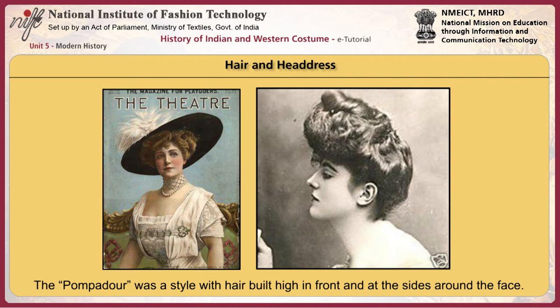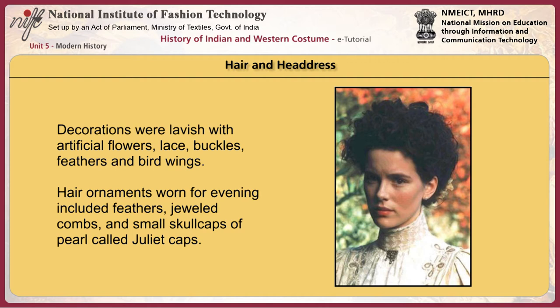The pompadour was a style with hair built high in front and at the sides around the face. Hat styles were large, wide-brimmed picture hats, and sometimes included brimless toques. Decorations were lavish with artificial flowers, lace, buckles, feathers, and bird wings. Hair ornaments worn for evenings included feathers, jeweled combs, and small skull caps of pearl called Juliet caps.